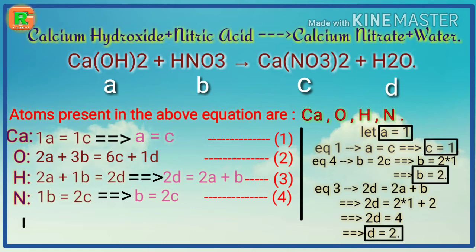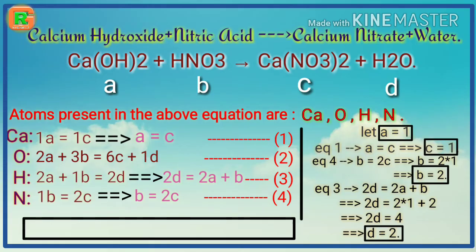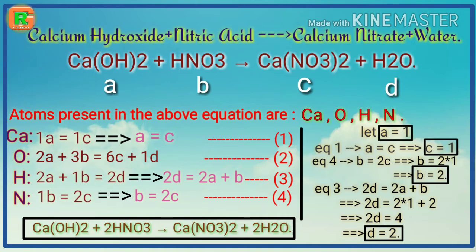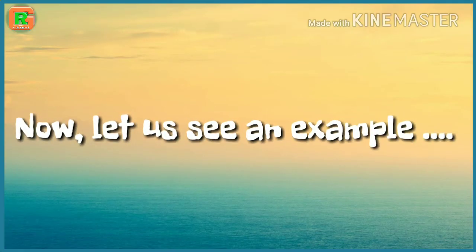Substituting A, B, C, D as coefficients in the chemical equation, we get: Ca(OH)₂ + 2HNO₃ → Ca(NO₃)₂ + 2H₂O. This is our balanced chemical equation. Now let us see another example.